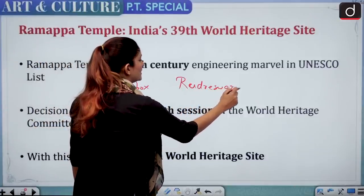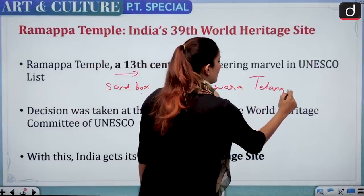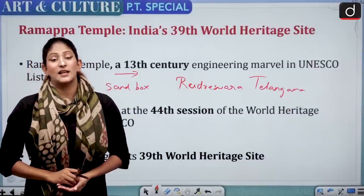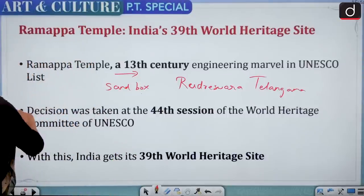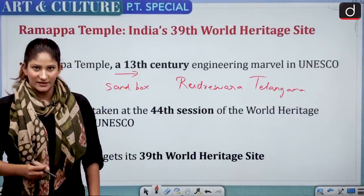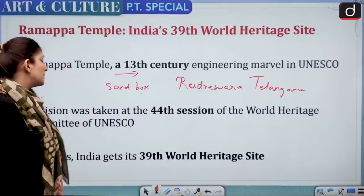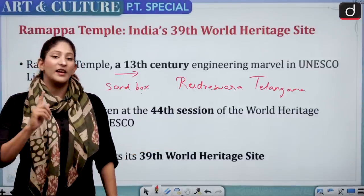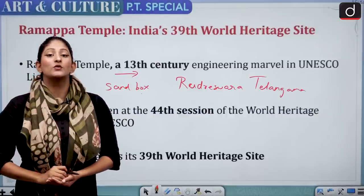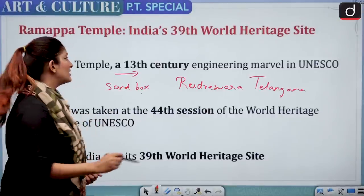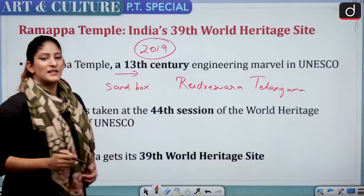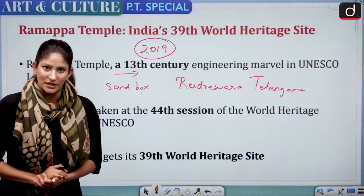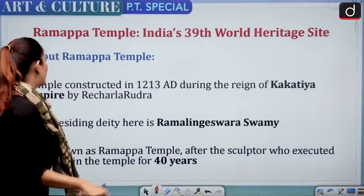Rudreswara Temple is present in Telangana, and it is the only temple in India that has been named after its sculptor — Ramappa. The decision to make it a World Heritage Site was taken at the 44th session of the World Heritage Committee of UNESCO. It was the only site nominated in 2019, although its name was present in the UNESCO tentative list since 2014.